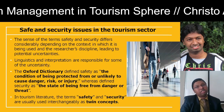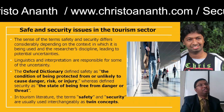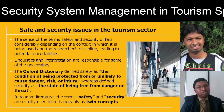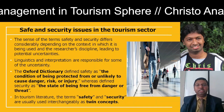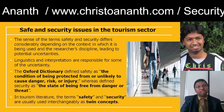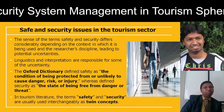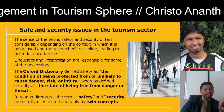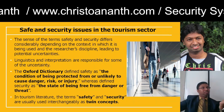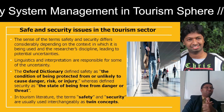In research, safety and security are actually different concepts. The Oxford Dictionary defines safety as the condition of being protected from, or unlikely to cause, danger, risk, or injury. Security is the state of being free from danger or threat. Safety is about protection from potential harm; security is about freedom from danger or threat. However, in tourism literature, both are considered as twins.